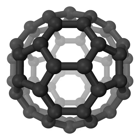Benzonitrile is the chemical compound with the formula C6H5CN, abbreviated PhCN. This aromatic organic compound is a colorless liquid with a sweet almond odor. It is mainly used as a precursor to the resin benzoguanamine.